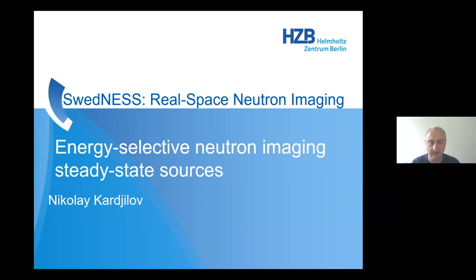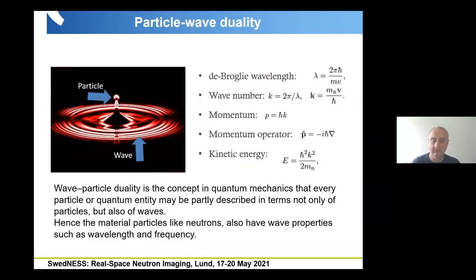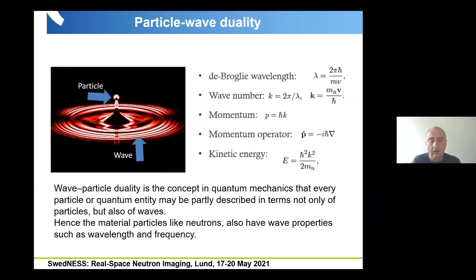I'll start with the consideration that wave-particle duality is the concept in quantum mechanics that every particle may be partially described not only in terms of particles but also of waves. In this way, material particles like neutrons can also be represented as wave propagation, so they have wave properties, and we can assign wavelength and frequency to neutrons with certain energy.